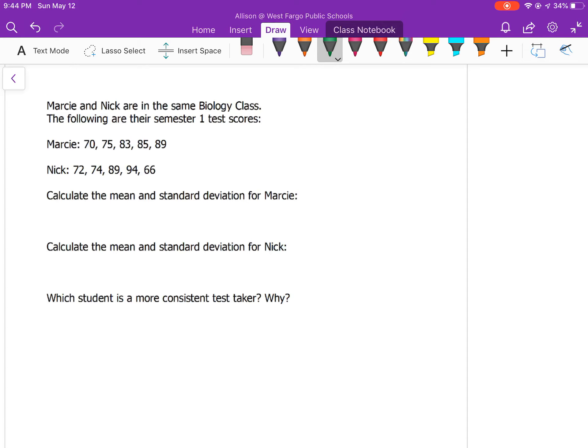This is reviewing standard deviation by hand. Marcy and Nick are in the same biology class. Calculate the mean and standard deviation for Marcy and for Nick. The formula is sigma, the standard deviation, equals the sum of all the x minus the averages squared, divided by n, where n is the total number of data points. We have five tests, so n is 5 for both. Finding the average for each one first, you add up the total and divide by 5. I got Marcy has an average of 80.4, and Nick with an average of 79.